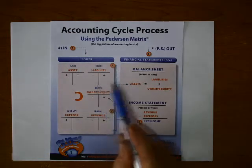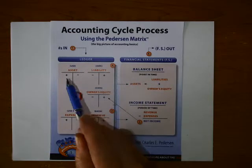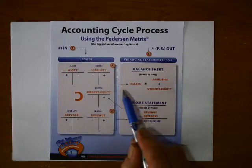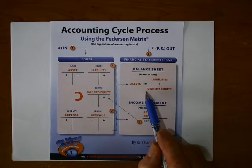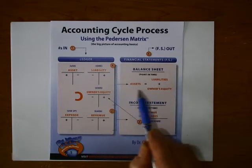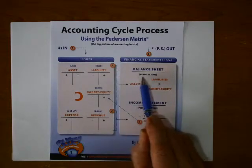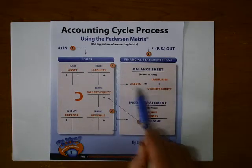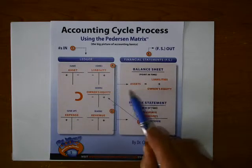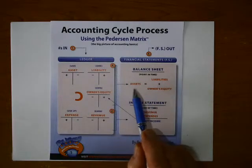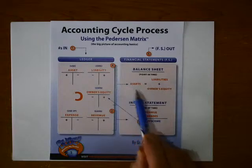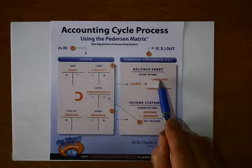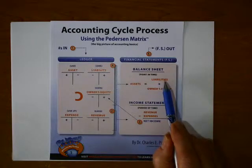Now we're ready to prepare the balance sheet. The balance sheet uses the remaining three general categories of accounts, and we set up an equation: assets equal liabilities plus owner's equity. The balance sheet is as of a point in time — it's like a snapshot. Assets are what we use, liabilities are what we owe, owner's equity is what we own. So the definition of a balance sheet is it shows what we use, which are the assets, and how the ownership is divided between the owner and who the owner owes money to, called creditors. Once we've completed this financial statement, step number four is completed.